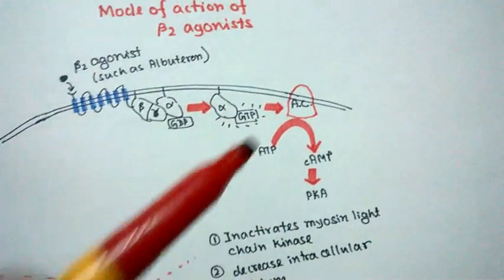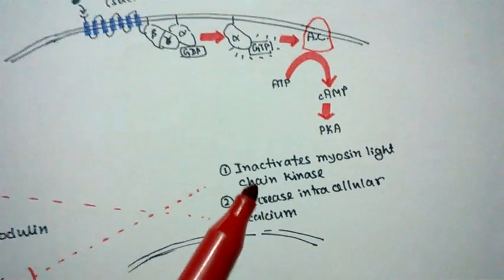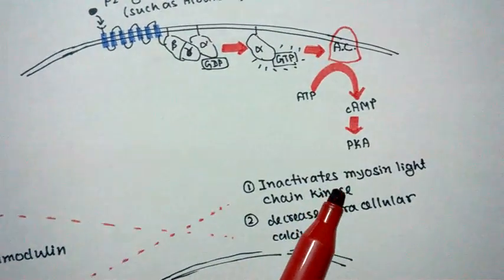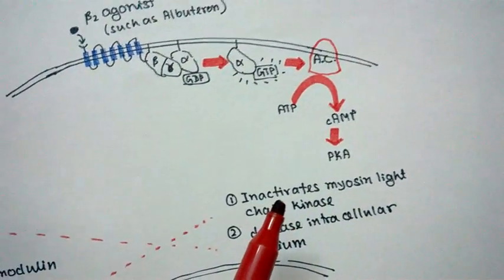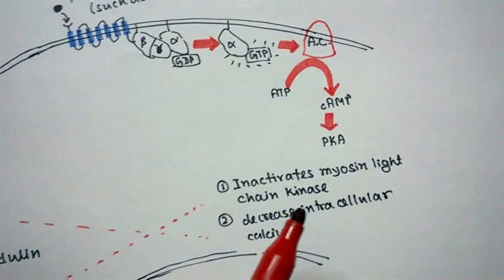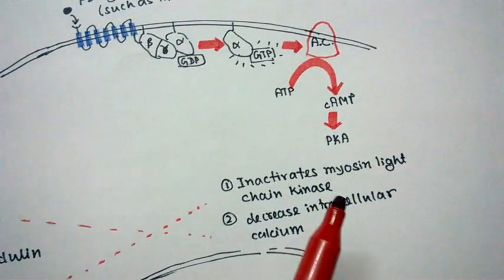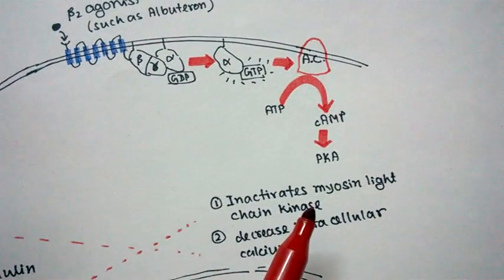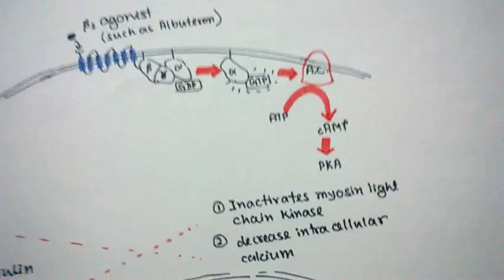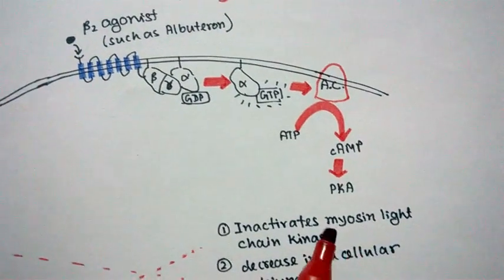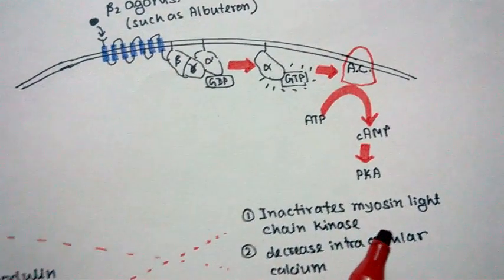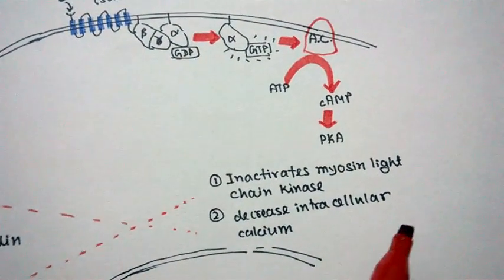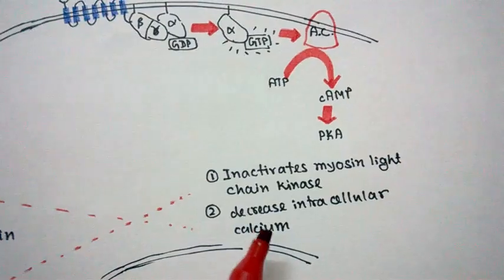What is the physiological effect of this mechanism? This whole signaling pathway will impart two physiological effects. One, it inactivates the myosin light chain kinase (MLCK), which is important for muscle contraction. If MLCK is inactivated, then muscle contraction can be prevented. Two, it decreases intracellular calcium.